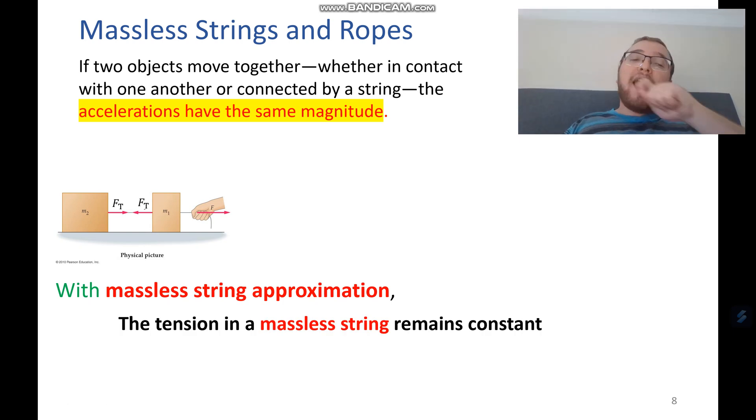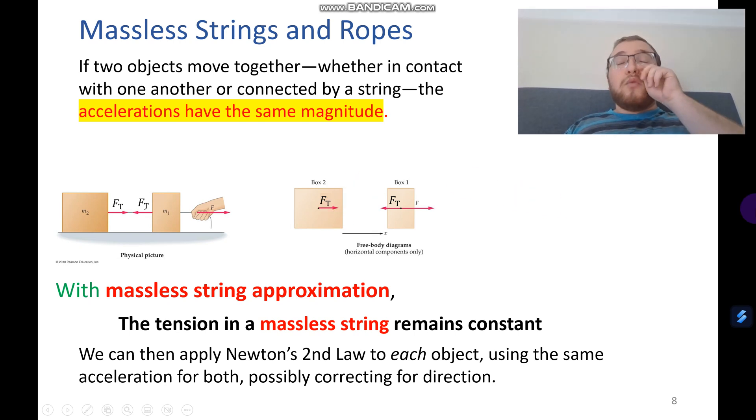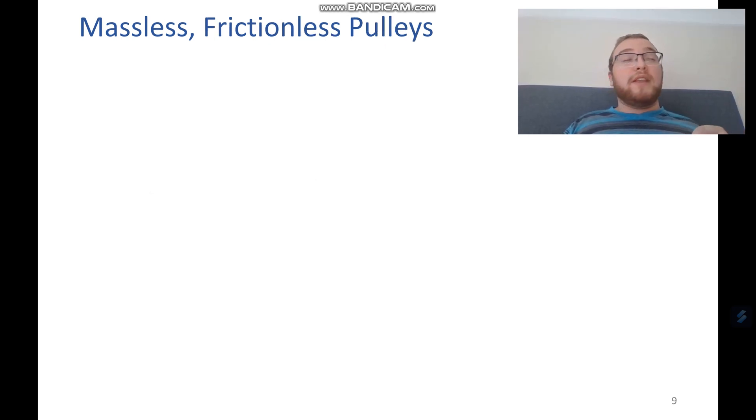So the tension is the same at every point in the string, because it's the same string. And then we can go draw free-body diagrams. We don't include the weights or the normals here, just to emphasize this. And we can go and apply Newton's second law, write our equations, and solve for the tension, or the acceleration, or whatever we need to.